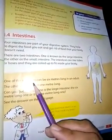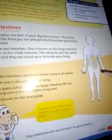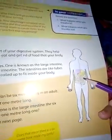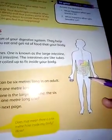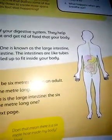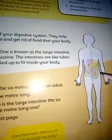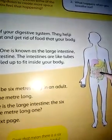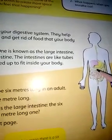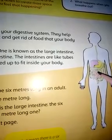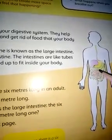One of the intestines can be six meters long in an adult. The small intestine is six meters long and the large intestine is one meter long. You might wonder why the six-meter one is called the 'small' intestine and the one-meter one is called the 'large' intestine. They are not named for their length — the large intestine is wider than the small intestine, but the small intestine is longer at six meters while the large is one meter.